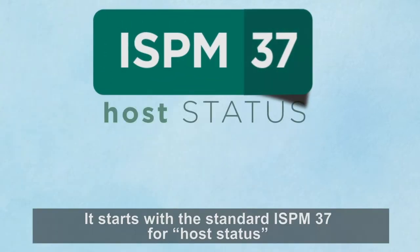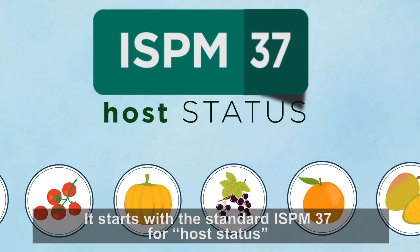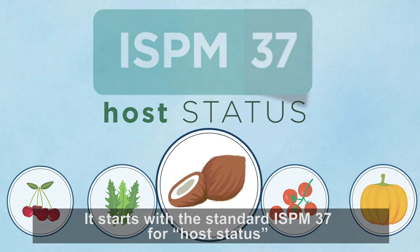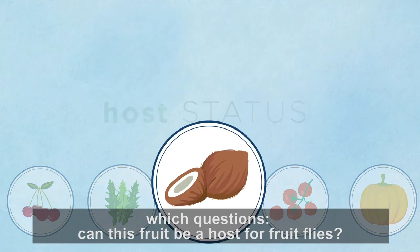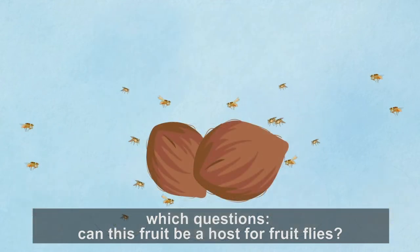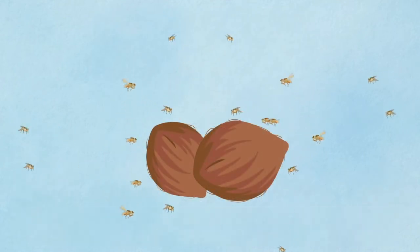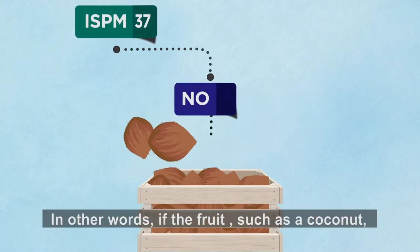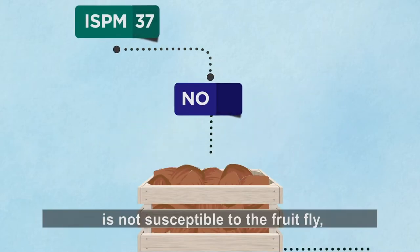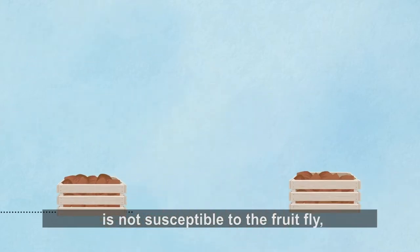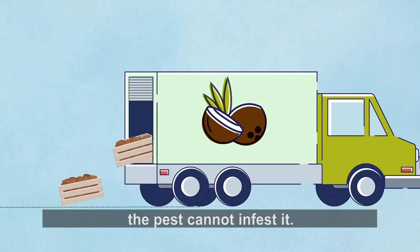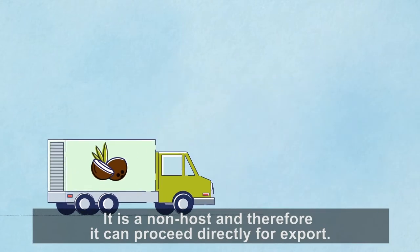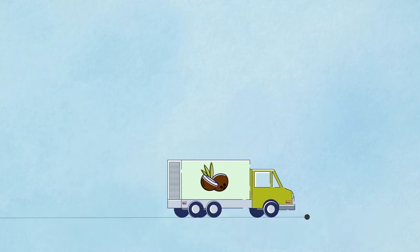It starts with the standard ISPM 37 for host status, which questions: can this fruit be a host for fruit flies? In other words, if the fruit, such as coconut, is not susceptible to the fruit fly, the pest cannot infest it. It is a non-host, and therefore it can proceed directly for export.